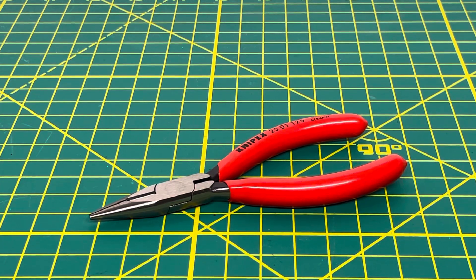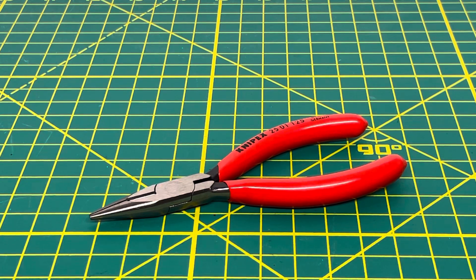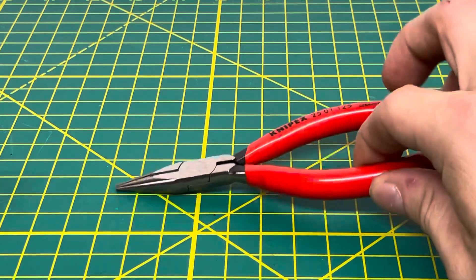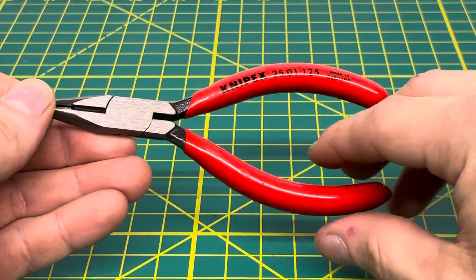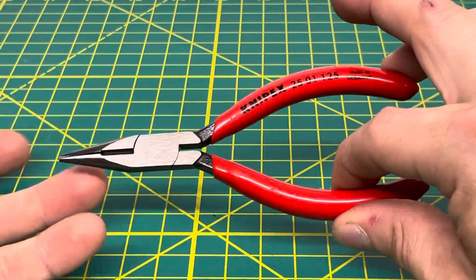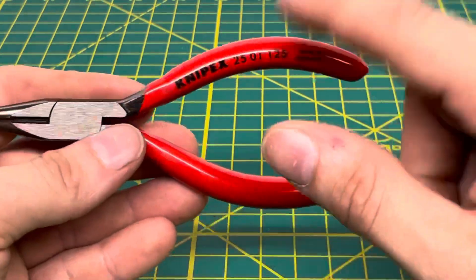Welcome to the Tool Review Channel. Today we're going to take a look at the Knipex 2501-125 radio pliers. These are made in Germany and are a five and a half inch pair of needle nose pliers. To start off the video, you can see the Knipex name and model number stamped onto the front of the tool.